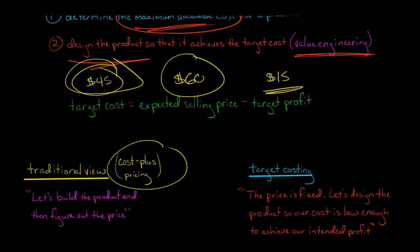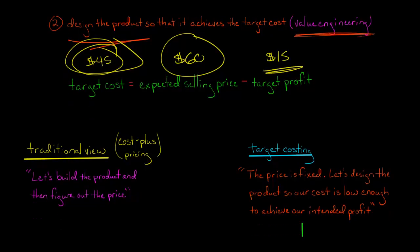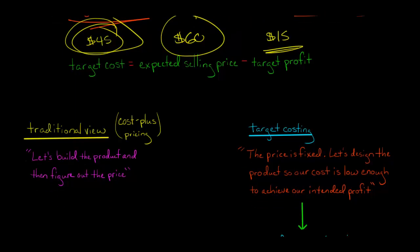In contrast, with cost-plus pricing, the idea is that we're going to build the product first, and then once we've built the product and seen what it costs, then we'll figure out the price based on the cost. We'll just take the cost and mark it up. But with target costing, the price is just fixed. The price is whatever it is. In this case, we said $60. Whatever the price is, we've fixed it, and now we're going to build the product so that the cost is low enough to achieve the profit that we want to achieve, which in this example was $15.